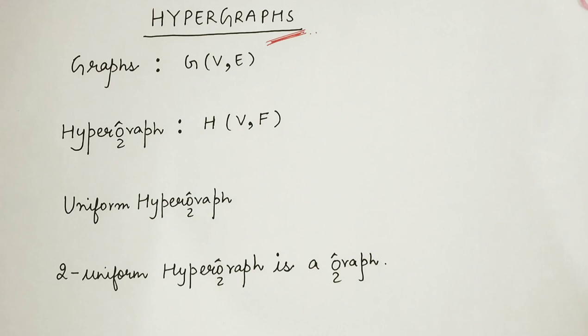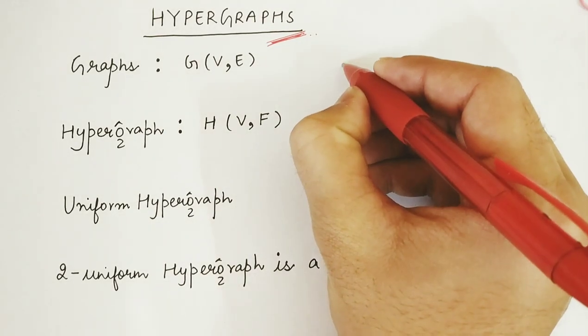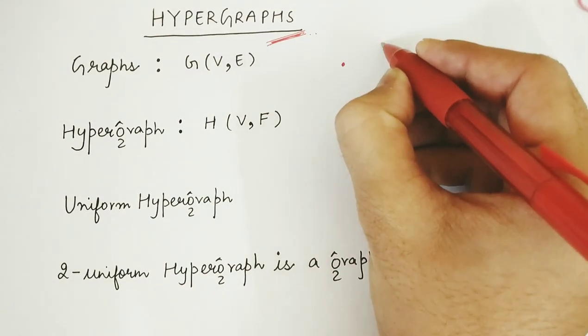So, a graph is a sort of diagram which represents a system of connections. Usually a graph is represented in this way.